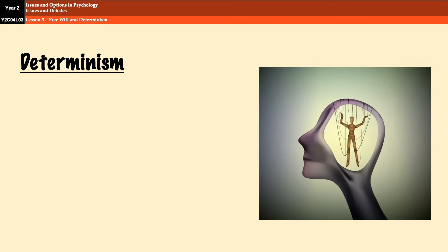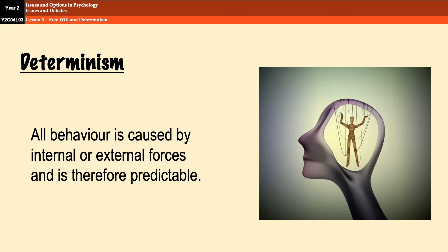Determinism, on the other hand, is the opposite of free will. It suggests that all behavior is caused by internal or external forces, and is therefore predictable. Examples of external forces could be things like rewards and conditioning, whereas examples of internal forces could be things like hormones, neurotransmitters, and genes.